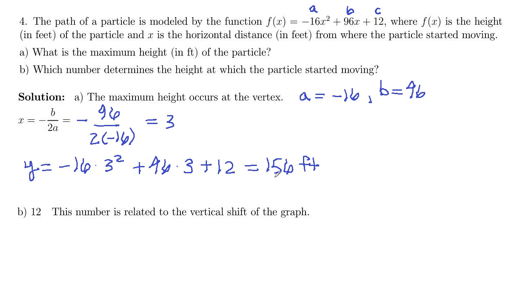So y-coordinate of vertex is going to get the maximum height. And then which number is related to the height at which the particle started moving? So that's going to be the height at time 0.